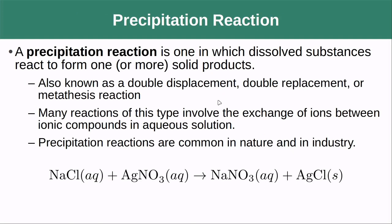Let's start with the simplest of these: the precipitation reaction. This is one in which dissolved substances react to form one or more solid products. We're going to have something dissolved, usually in water, and then we're going to have that come out of solution as a solid.